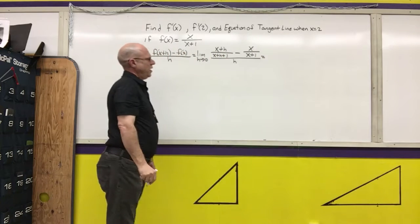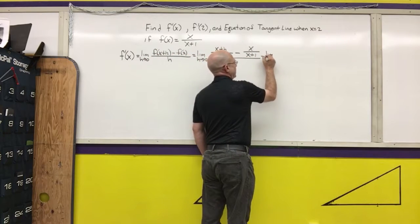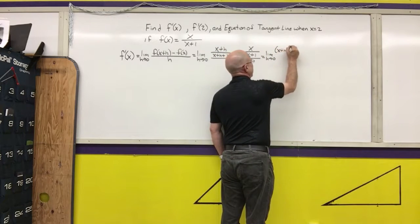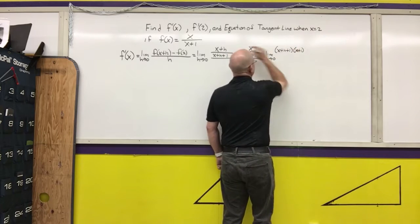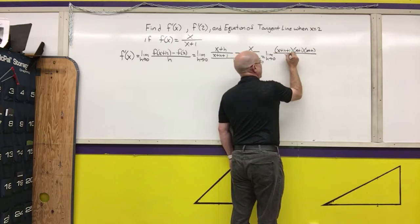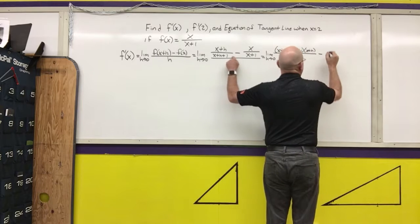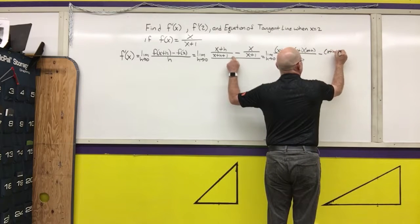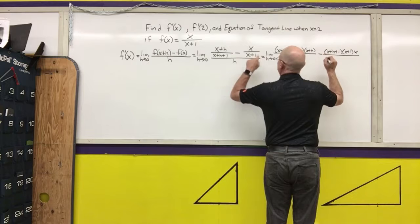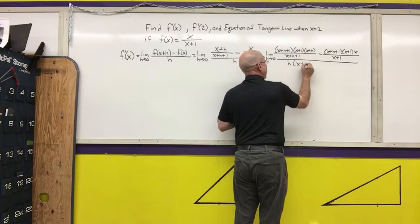Our next step is to multiply by the lowest common denominator. So I get the limit as h approaches 0 of x plus h plus 1 times x plus h over x plus h plus 1 minus x plus h plus 1 times x over x plus 1, all over h times x plus 1.